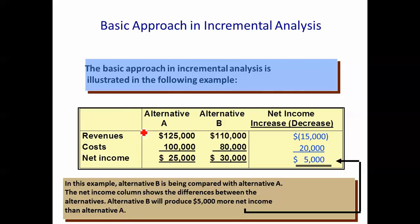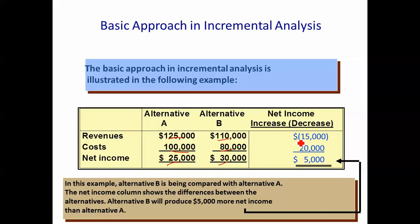For the basic approach, we have two alternatives. In one alternative, the revenue is going to be 125 and the costs are going to be 100. In the other alternative, the revenue is going to be 110 and the costs are going to be 80. One shows a net income of 25, the other a net income of 30. We focus on the difference between these two alternatives, comparing B to A. The difference in revenue is that A has 15,000 more than B.